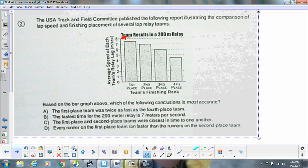Well your first place team was somewhere up here around 7.5. The fourth place team was down here at around 4.5, so that would not be correct.